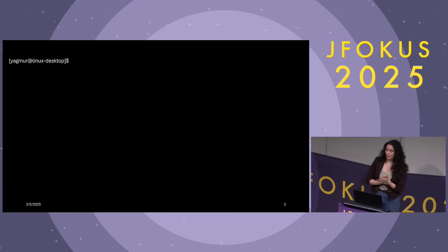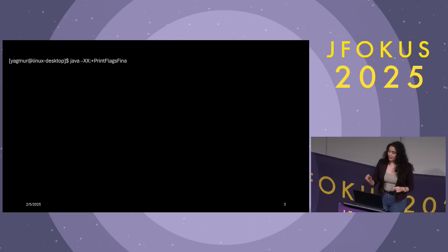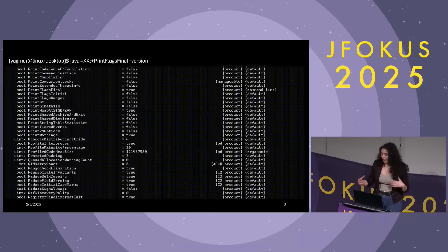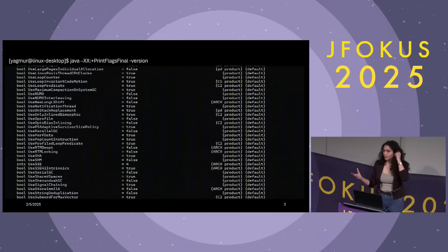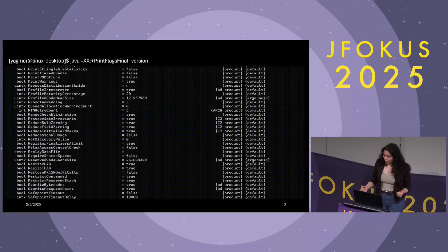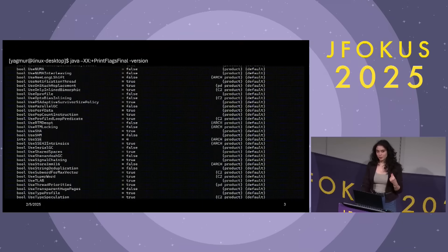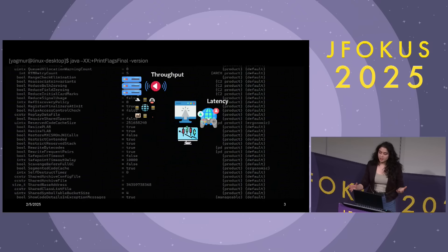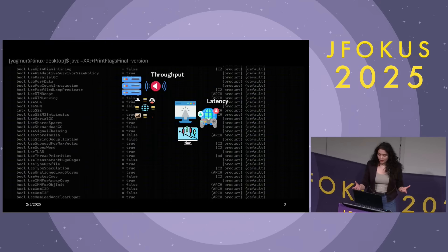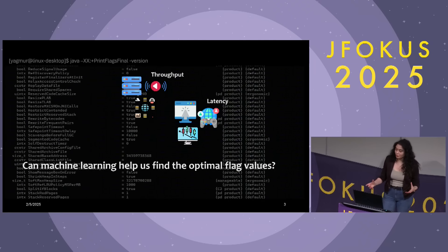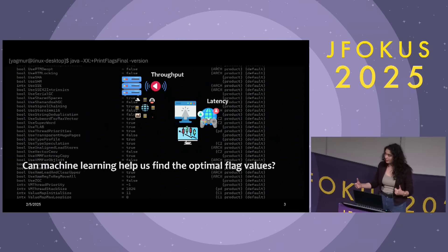First, let's make the problem clear. Do you know how many JVM flags there are, or have you ever printed all of them? By using the print flags final option, we can see all the flags and their values — some related to compiler, some control memory settings that we can set to reasonable values, and some are just binary flags that we can set to true or false. We don't need to use all of them, but if we care about our program's performance — by performance, I mean throughput and latency — it might be helpful to be aware of these flags. Adjusting some memory-related flags could improve performance, but how are we going to know which values are the best? Unfortunately, it is not an easy task. So can machine learning help us find the optimal flag values that maximize throughput and minimize latency? Let's find out.